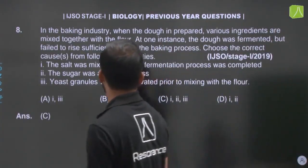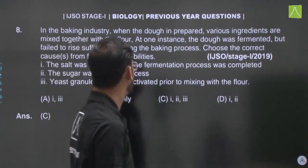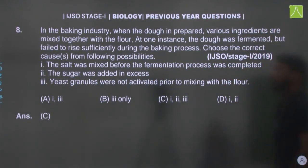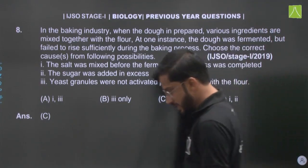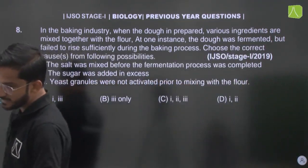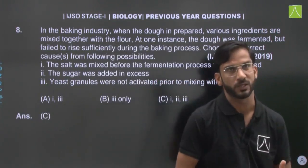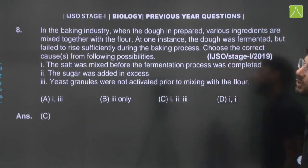Next question: In a baking industry, when the dough is prepared, various ingredients are mixed together with the flour. At one instant, the dough was fermented but failed to rise sufficiently during the baking process. We need to choose the correct answer explaining why.